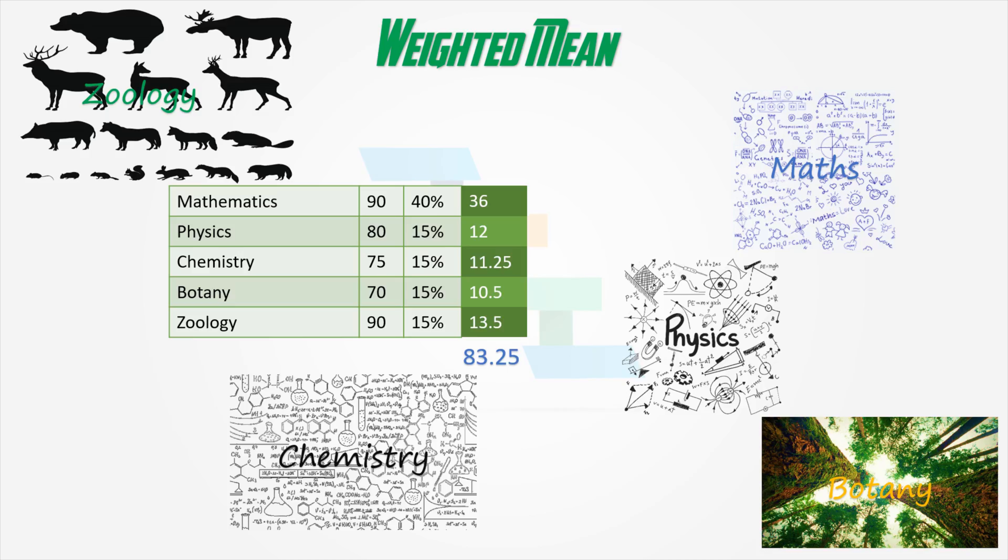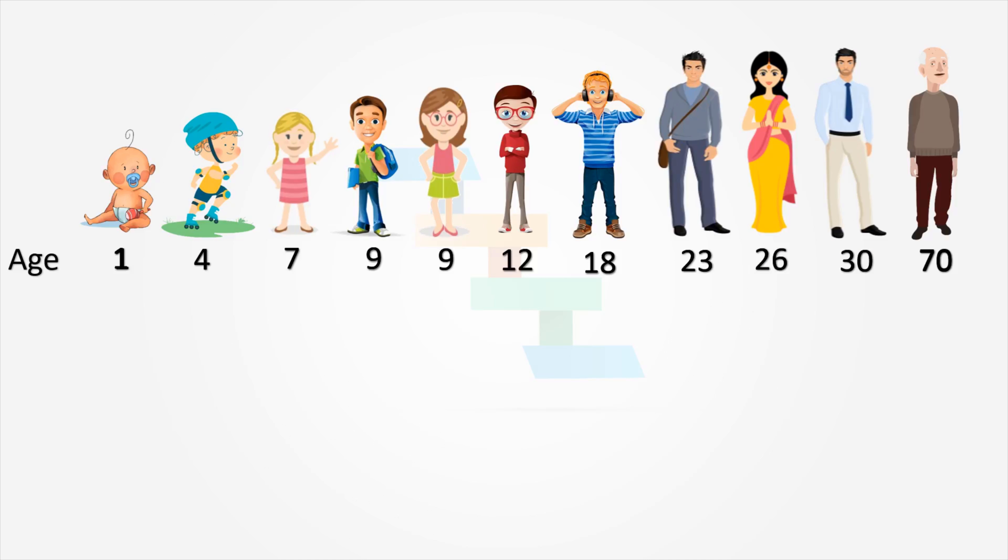Now we saw about range, mean, median, mode, and the weighted mean. Now we will take a data set and we will calculate mean, median, mode, and range. We will take age of some random 11 people and we will calculate the mean, median, and the mode and the range.